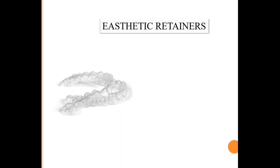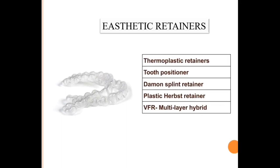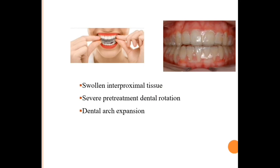The third category is aesthetic retainers, which include thermoplastic retainers, tooth positioners, diamond splint retainers, plastic Herbst retainers, Vivera, and multi-layer hybrid retainers. They are made from 1.5 mm thick polyvinyl chloride material. Aesthetic retainers are contraindicated in patients with poor oral hygiene because retention depends on the plastic engaging undercuts gingival to the contact point, and hyperplastic gingival tissue in poor oral hygiene cases can obliterate these undercuts. They are also not advisable in cases of swollen interproximal tissue, severe pre-treatment dental rotation, and dental arch expansion.